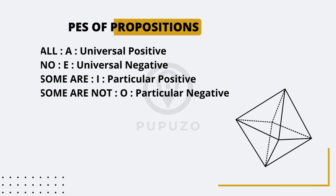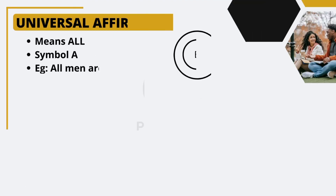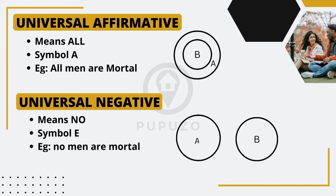The first type is the universal affirmative proposition, represented by the symbol A. It expresses that the entire subject belongs to the predicate. For example, the proposition 'all men are mortal' is a universal affirmative proposition, where all men are included in the category of being mortal.